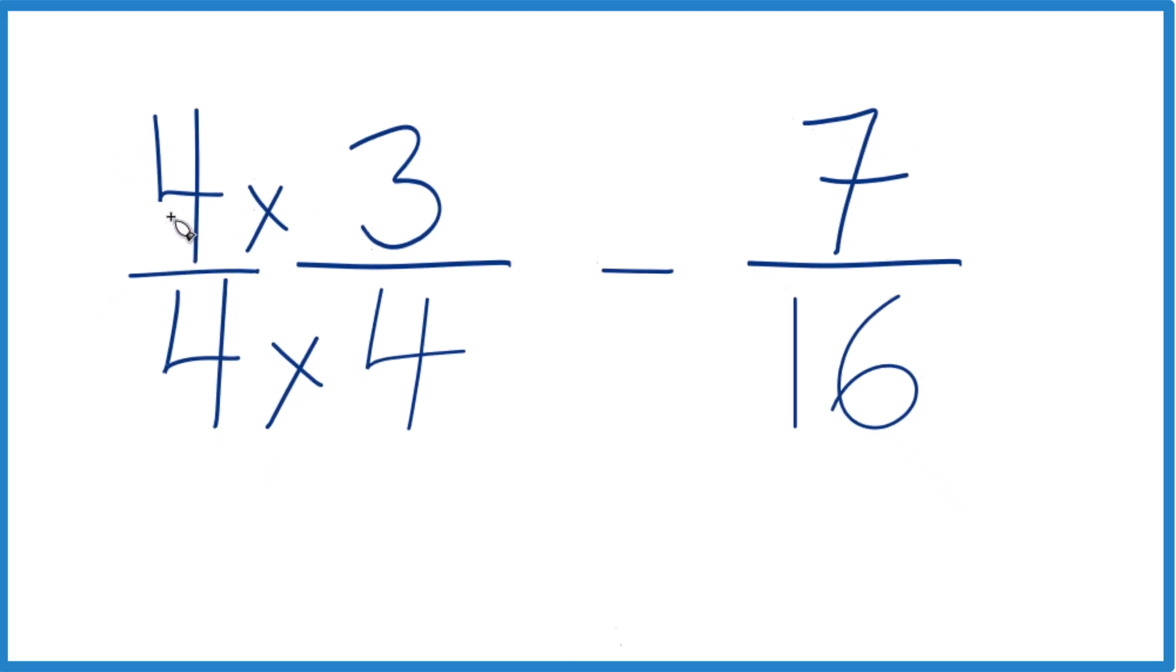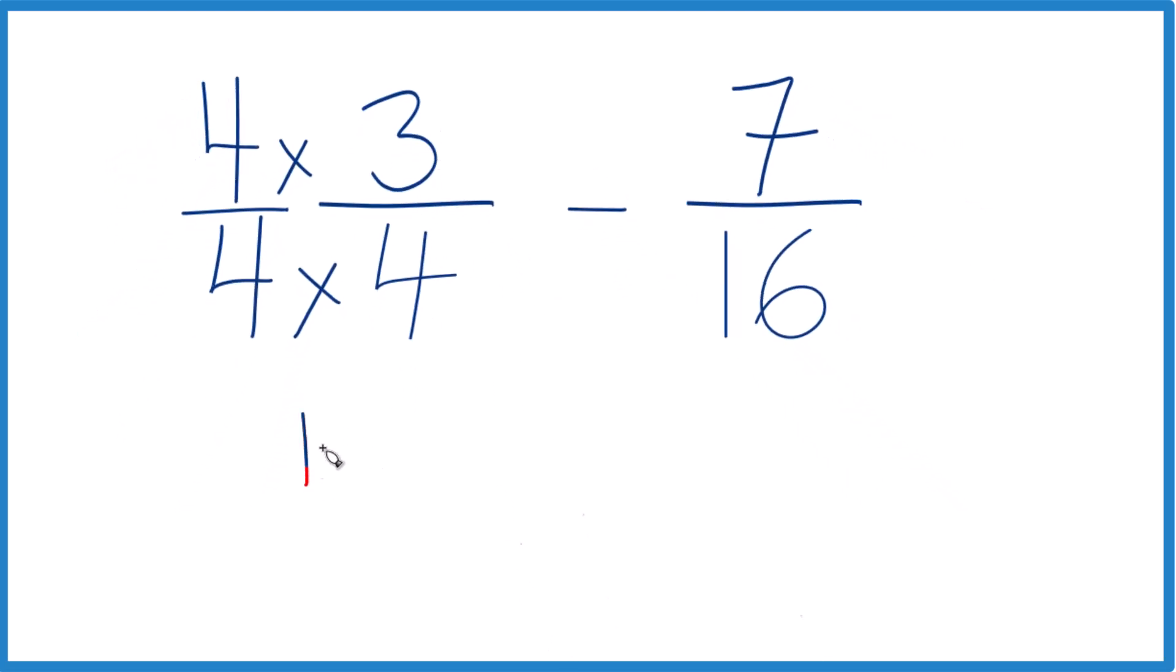But now we can do this. 4 times 3, that's 12. 4 times 4 is 16. And then over here we could subtract 7 sixteenths. So now we have this common denominator here.